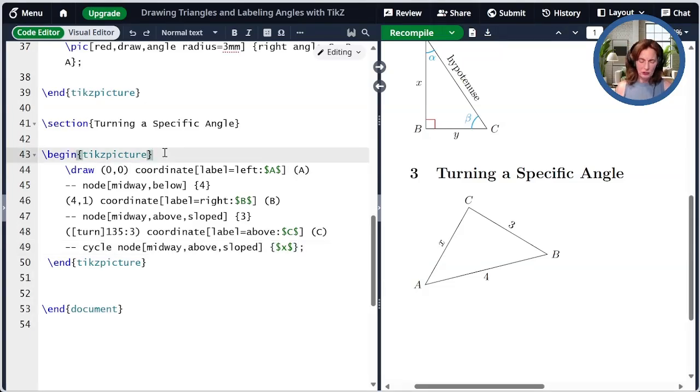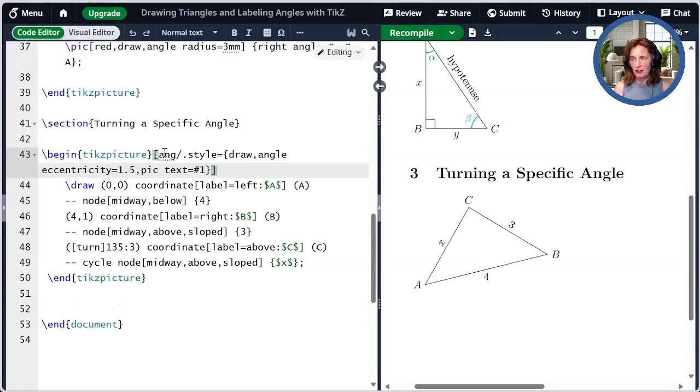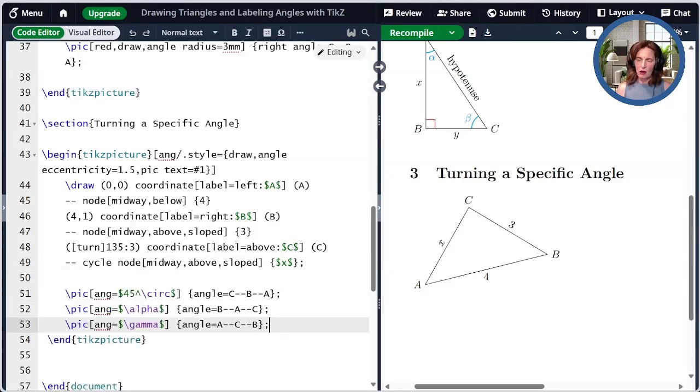Before I label my angles, I want to create a style that I can use to make it a little easier. So I want to specify a whole bunch of stuff every time. So I'm creating a style called ANG and I'm specifying that that style will draw the angle. It'll set the angle eccentricity to 1.5 and it will take an argument to specify the text that gives the label for the angle. Now that I have that, I can actually go ahead and draw my angles. So I'll go ahead and draw all three angles using my special style. So I say ANG equals 45 degrees for the angle at B and then I also draw my other angles. I'm labeling alpha and gamma on the inside of this triangle. Using this style saved me a lot of extra typing. Now we have a classical problem in trigonometry of finding the distance x and angles alpha and gamma when you're given two sides and one angle of the triangle.